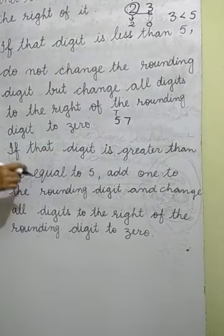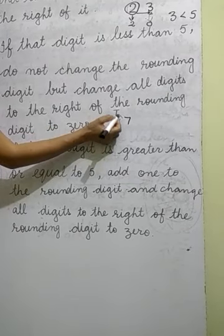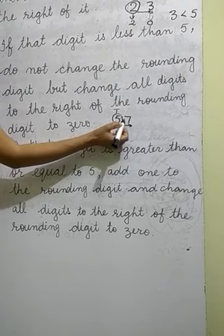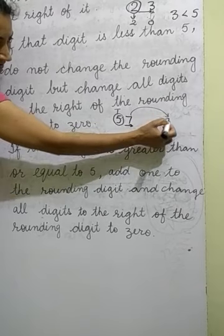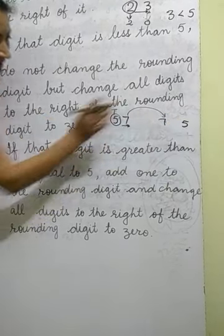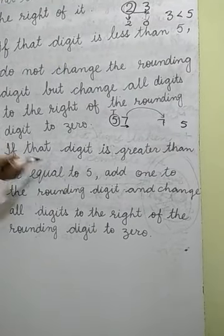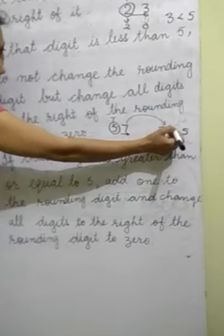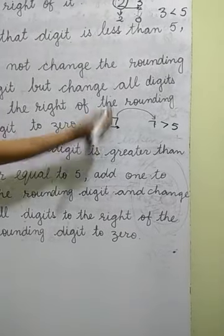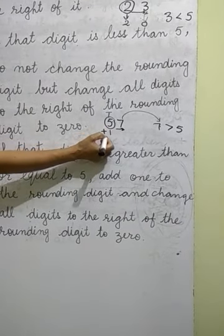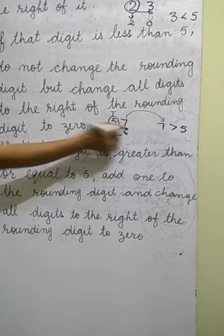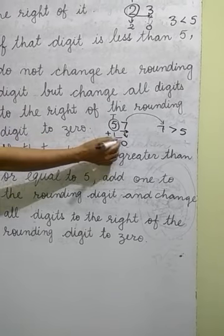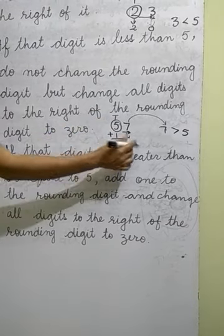Let us take 57. To round to the nearest 10, the rounding digit is 5. Put an arrow to the right digit, which is 7. Compare with 5 — since 7 is greater than 5, we add 1 to the rounding digit: 5 plus 1 equals 6. All digits to the right of the rounding digit become 0. So 57 will be rounded to 60.